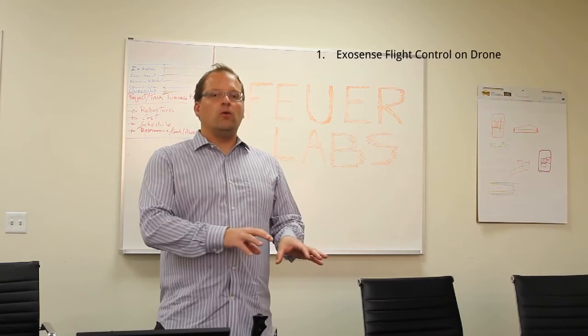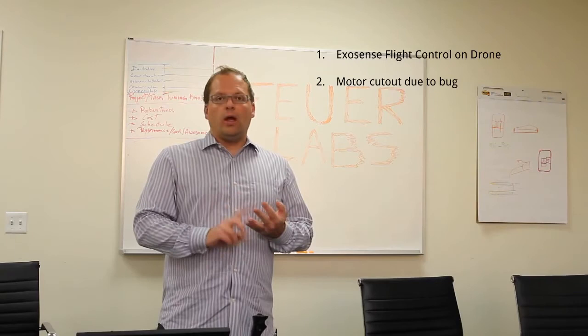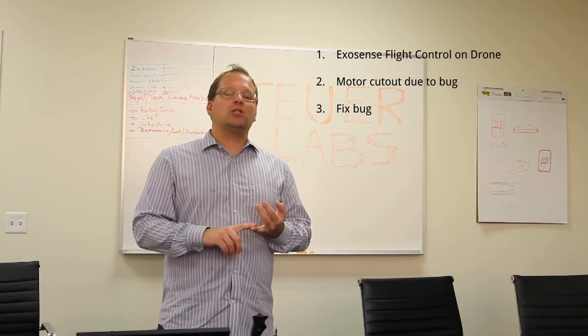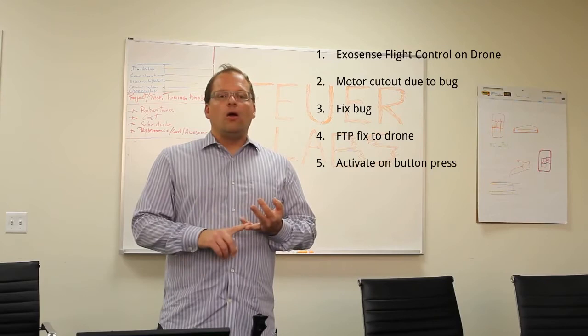First of all, we downloaded and replaced the software with our own flight control software as an Exosense device application. Once it got airborne, we saw that there was a glitch in the software, which was due to a bug that killed off the motors. We had a look in the code, we fixed the glitch in the code, we did a build, and we transferred a new image over to the drone as it was flying in the air. However, it wasn't activated until we explicitly told it to activate itself by pressing the fire button.